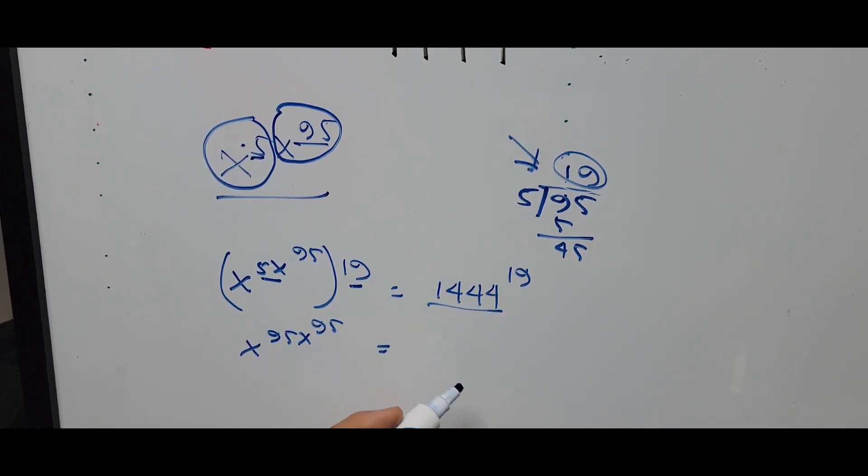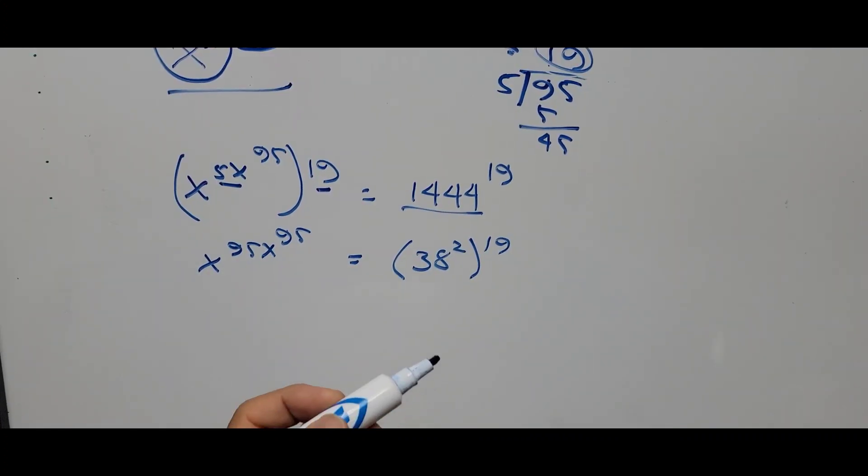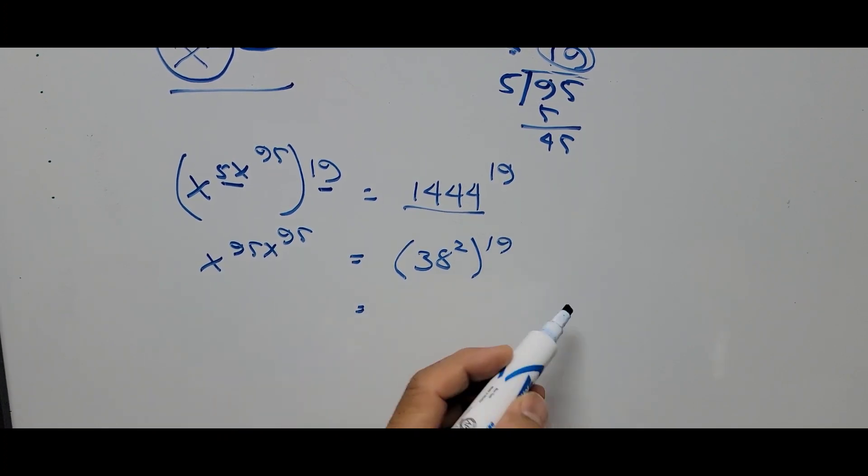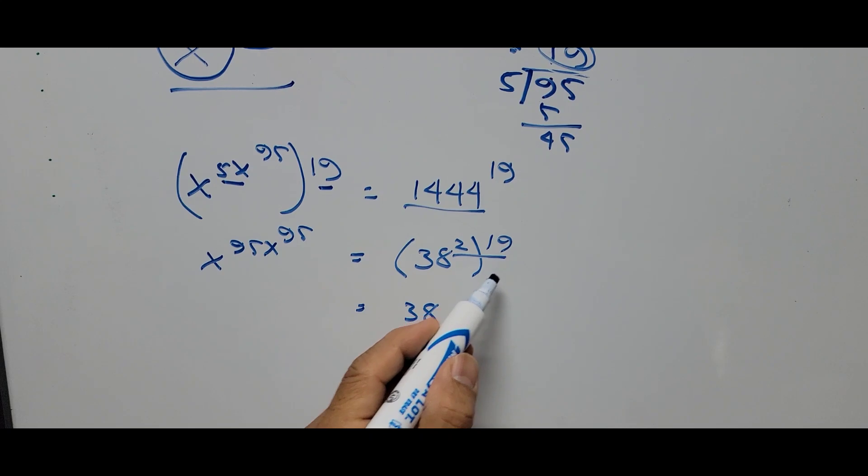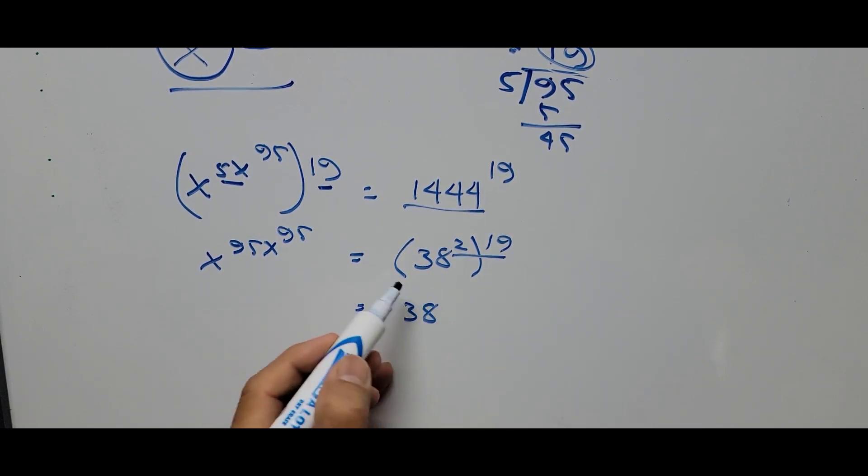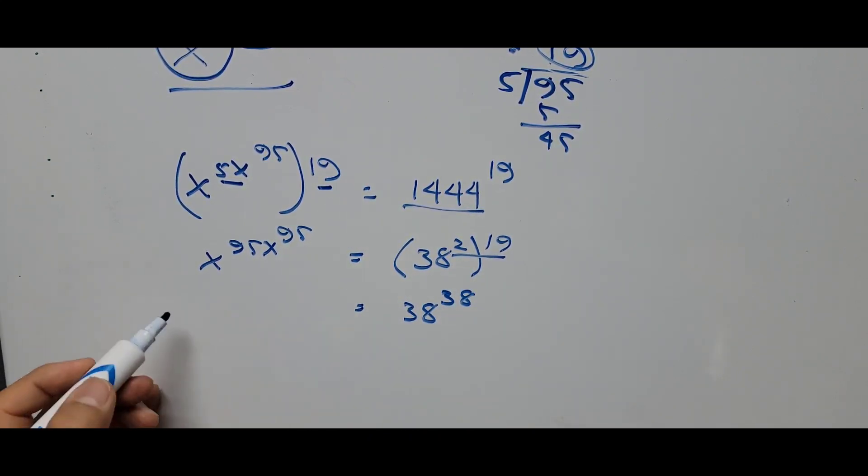is a perfect square, so that is 38 squared raised to 19. The right side of the equation now is, we're multiplying 19 times 2, so that is 38 to the power 19 times 2 is 38. And the left...